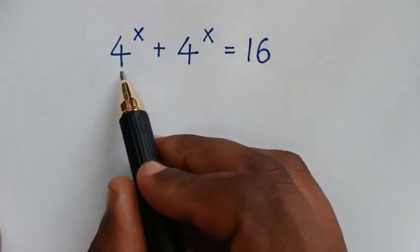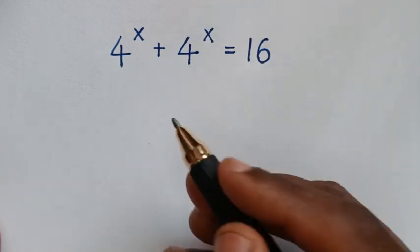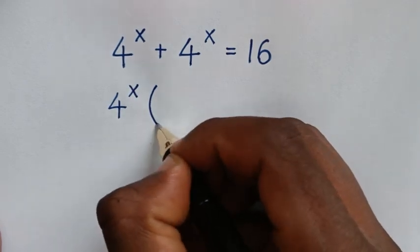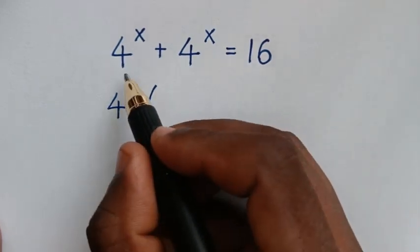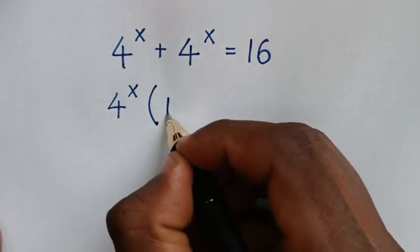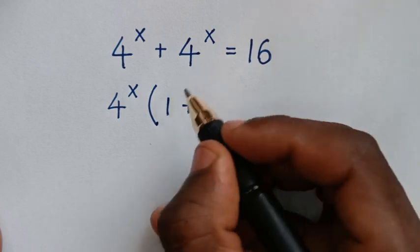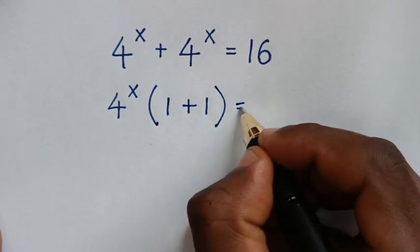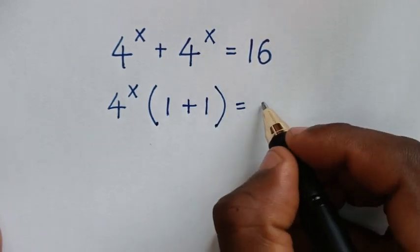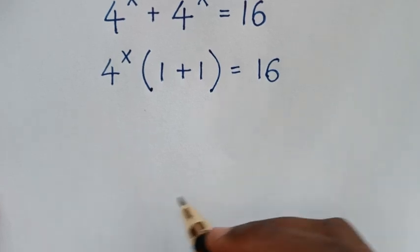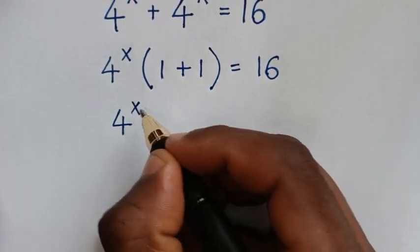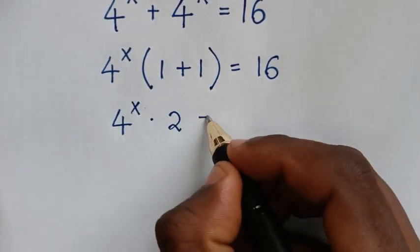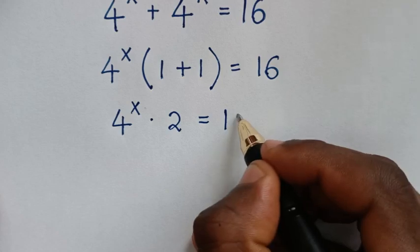On the left side, 4 power x is common, so we'll take 4 power x out of the bracket. Then 4 power x divided by 4 power x is 1, plus 4 power x divided by 4 power x is 1, all in the bracket, is equal to 16. So it will be 4 power x times 1 plus 1, which is 2, is equal to 16.